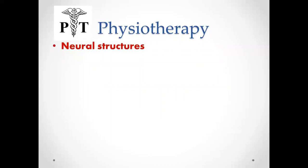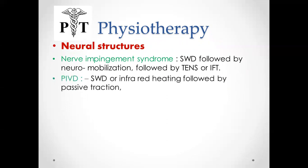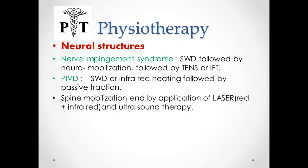For neural structure pain, nerve impingement syndrome can be treated with SWD followed by neuromobilization, followed by TENS and IFT. For PIVD, treatment can start with SWD or infrared heating, followed by passive traction, spinal modulation, and the application of laser or ultrasound therapy.